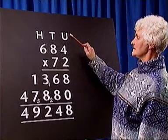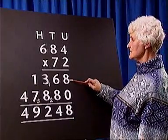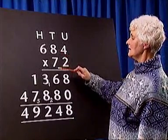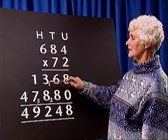First of all, we multiply 684 by 2. Two fours are 8, two eights are 16, which is 6 down carry 1, two sixes are 12 and 1 is 13.